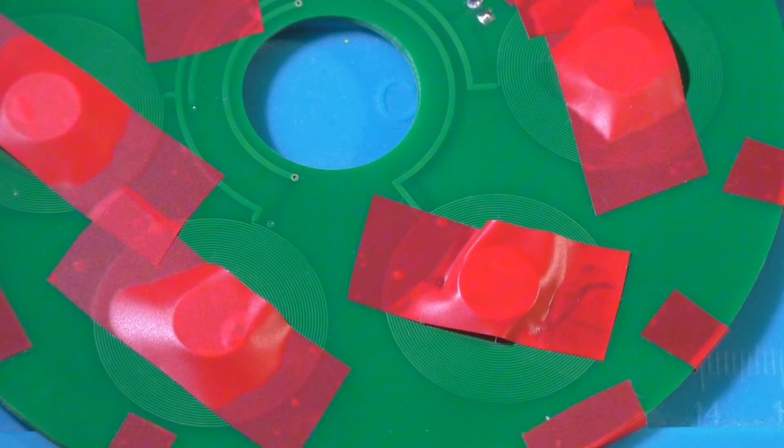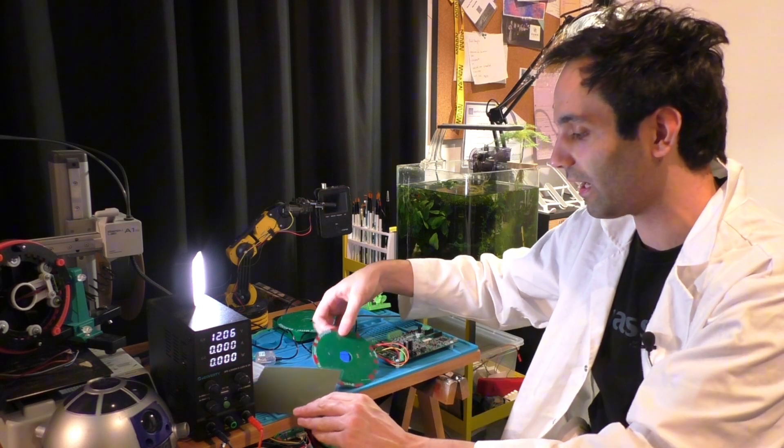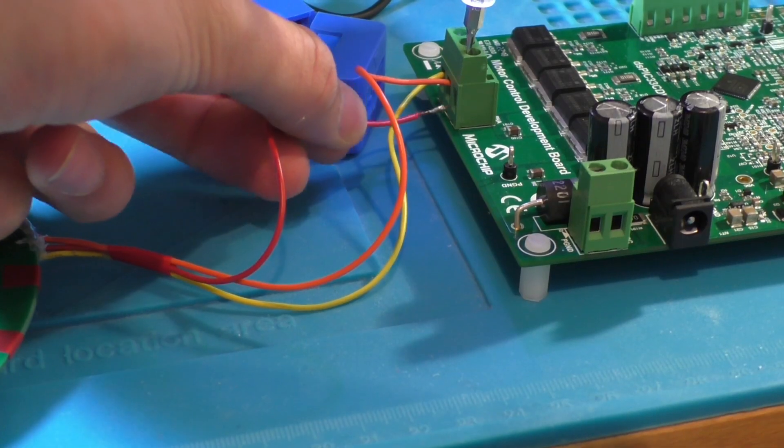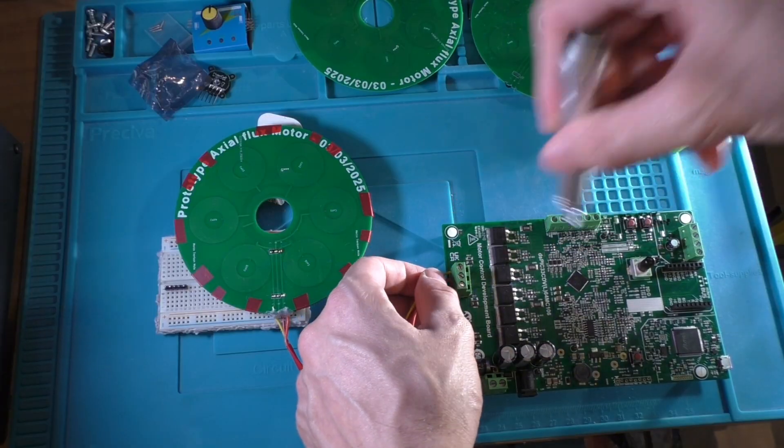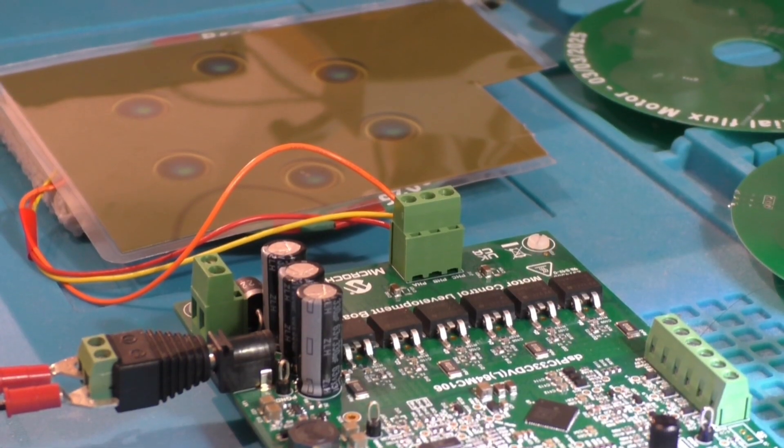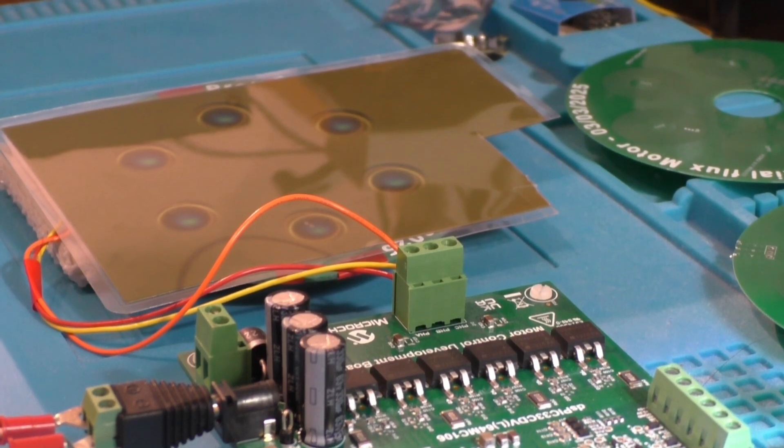So, by doing this, I decided to put the PCB axial flux motor connected to a motor driver. In this case, I used a motor control development board and used the motor bench as a development environment to create this open-loop rotating reference frame. So, as we can see, I plugged everything up.